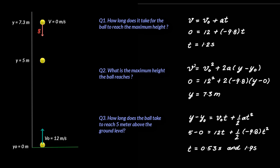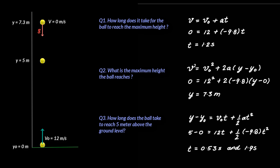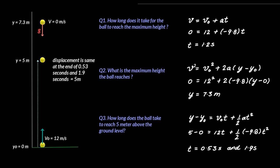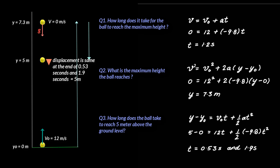Two values of t should not surprise you — first, the ball reaches the 5-meter mark on its way up, and then reaches the 5-meter mark again 1.9 seconds from the beginning on its way down. This also illustrates the difference between distance and displacement: the displacement is the same at 0.53 seconds and 1.9 seconds, but the total distance at 1.9 seconds is more — 7.3 meters up to max height plus 2.3 meters back down, totaling 9.6 meters.